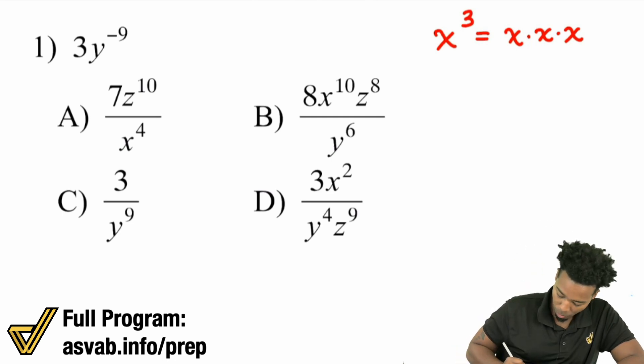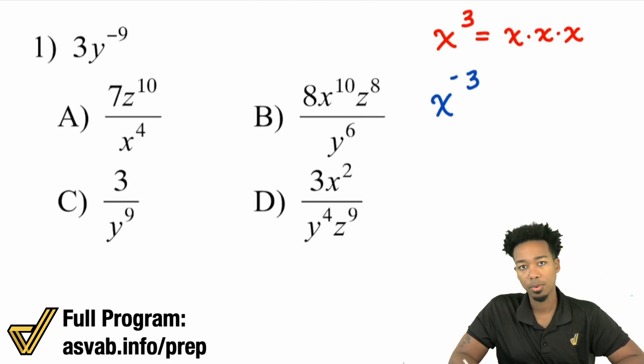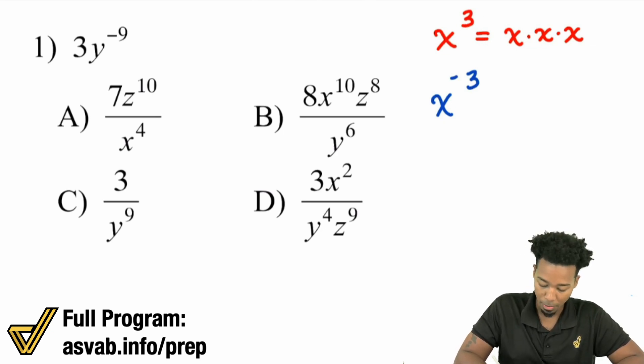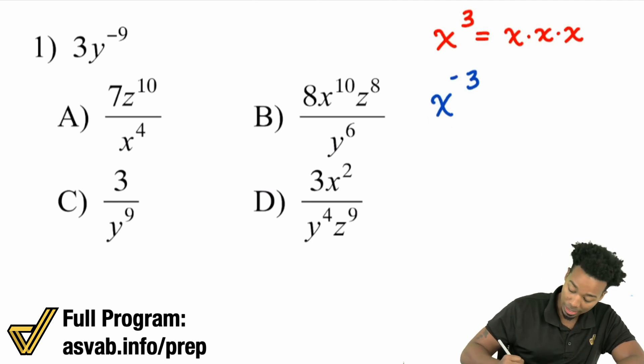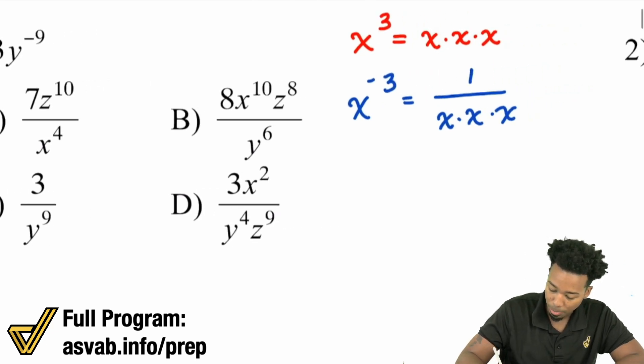The opposite would be something like this, x to the power of negative three. So here's the thing, my party people, a positive exponent means that you are multiplying that base that many times. So here, x to the power of three means you're multiplying x by itself three times. A negative exponent means you are dividing that base that many times. So you're dividing by x three times. And so what that looks like, everybody is this, one over x times x times x, which would end up becoming one over x cubed.